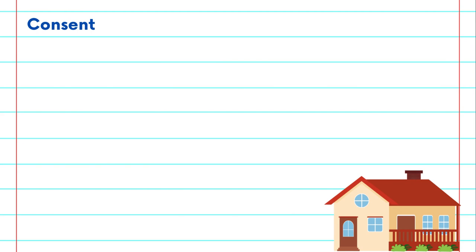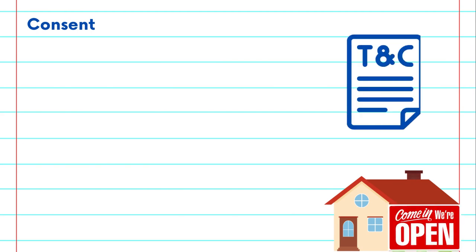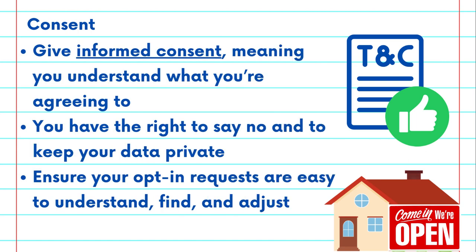And lastly, consent. This is like giving someone permission to enter your digital house. When you click 'I agree' to the terms and conditions, you're granting consent for a company to access and use your data. It's essential to give informed consent, meaning you understand what you're agreeing to. If a company asks for more data than necessary, or if you're uncomfortable with their practices, you have the right to say no.